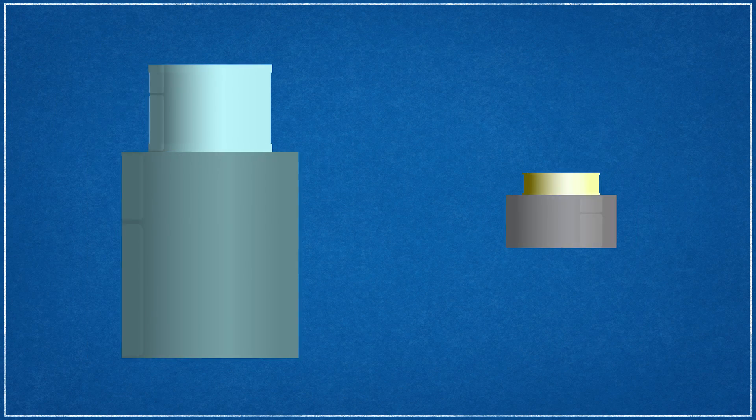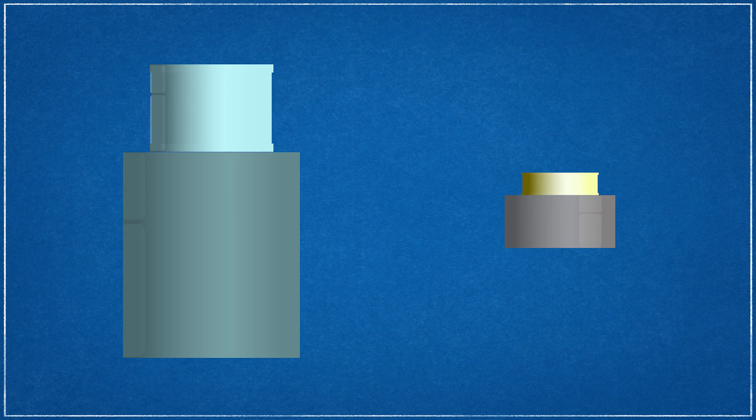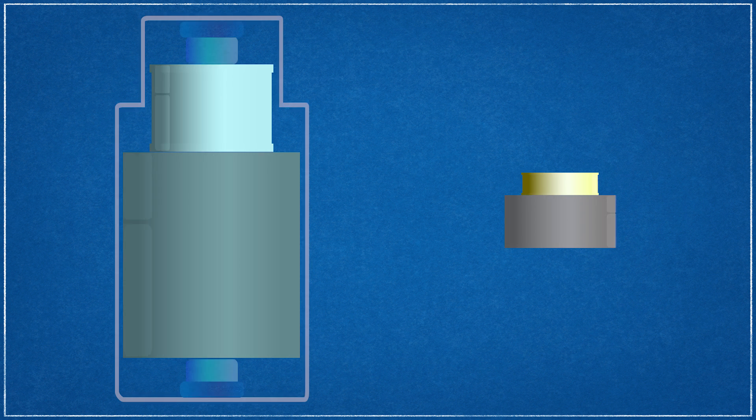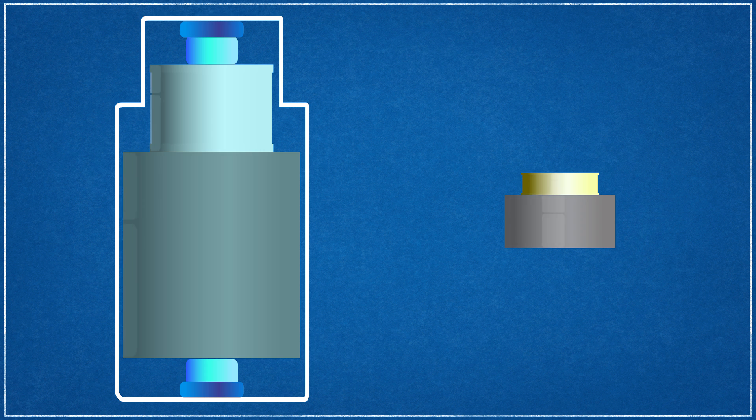Flywheel energy storage system designs generally fall under one of two strategies. Low-speed flywheel systems that operate under 10,000 RPM and high-speed variants that can approach 100,000 RPM. Low-speed flywheels are usually made of heavier, metallic materials and are supported by either mechanical or even non-contact magnetic bearings that support the load with magnetic levitation. High-speed flywheels typically use lighter, stronger composite materials and require magnetic bearings.